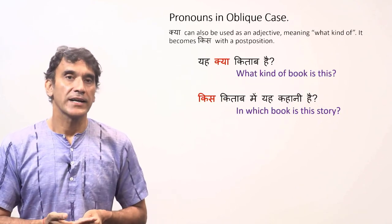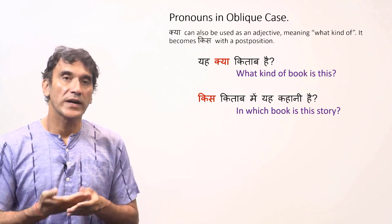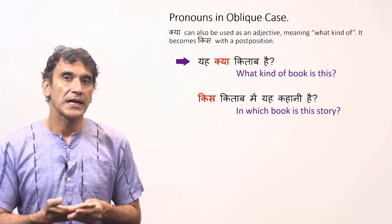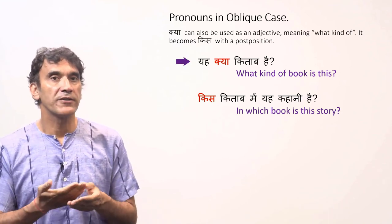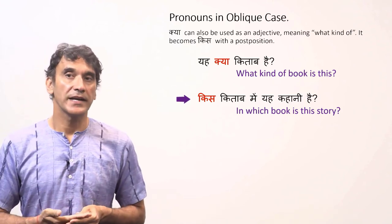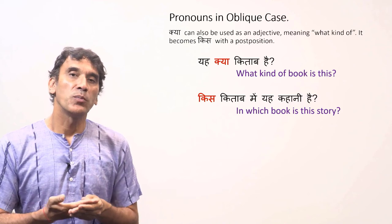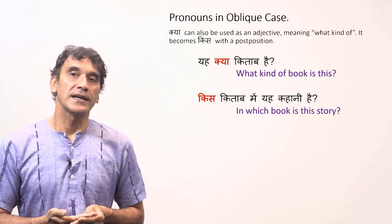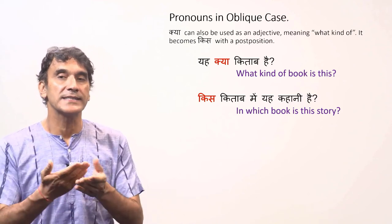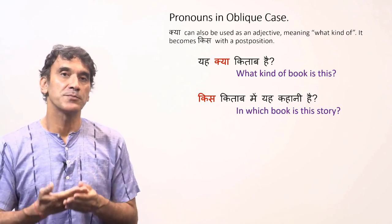As we know, 'क्या' can also behave like an adjective meaning 'what kind of' or 'which' — for example, 'यह क्या किताब है?' means 'what kind of book is this?' When used adjectivally, the oblique form of 'क्या' is 'किस' — so 'किस किताब में यह कहानी है?' means 'in which book is this story?'